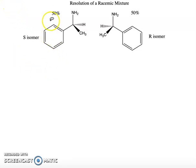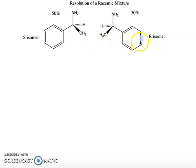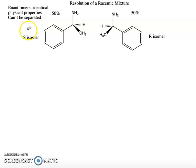I want to talk today about resolution of a racemic mixture. When we talk about resolution of a racemic mixture, we're talking about taking a racemic mixture — which is a mixture of 50% each of a pair of enantiomers — so 50% of the S isomer and 50% of the R isomer. Separating enantiomers is very, very difficult. In fact, enantiomers have identical physical properties, so they can't be separated. This S enantiomer can't be separated from this R enantiomer.